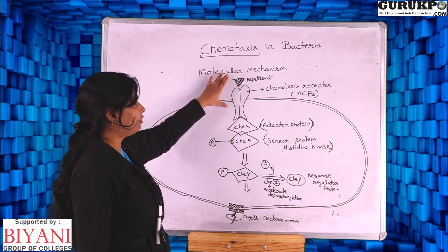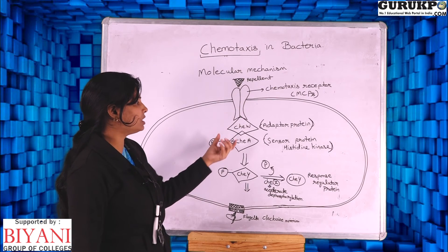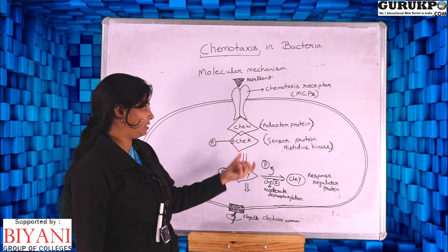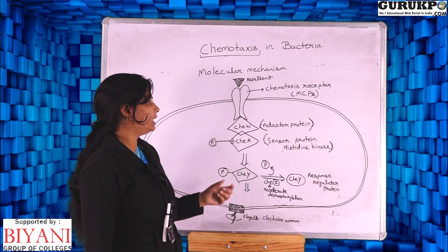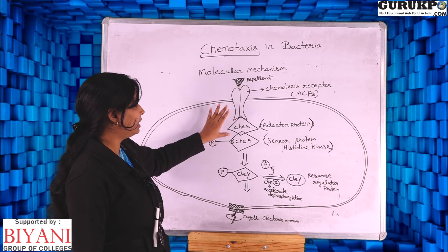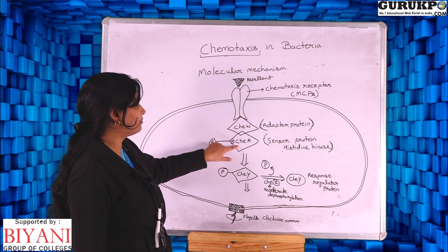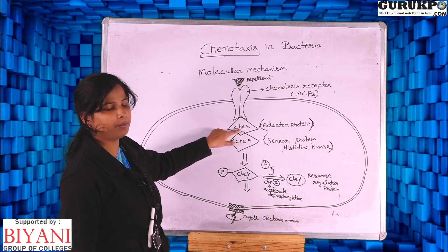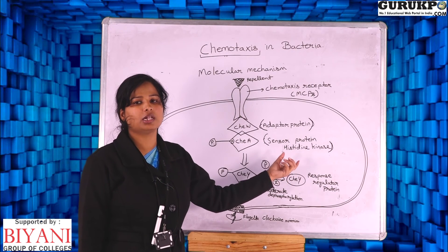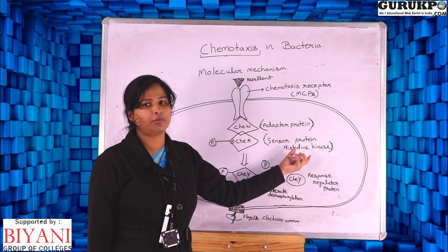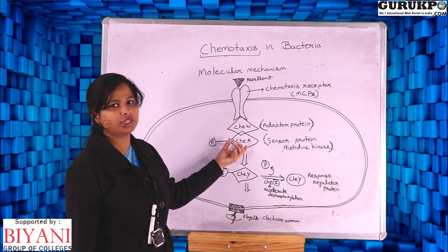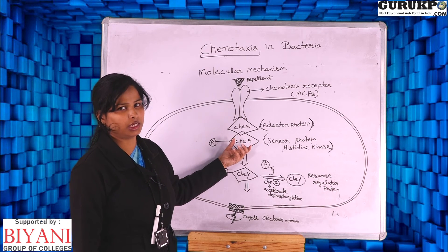The binding of the repellent to the chemotaxis receptor causes the binding of the adapter protein CheW to this receptor. CheW then increases the binding of CheA, which is a sensor protein with histidine kinase activity — meaning it autophosphorylates on its histidine amino acid.